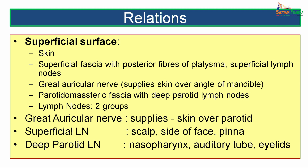The superficial surface is related to the skin, superficial fascia with posterior fibers of platysma, superficial lymph nodes, the great auricular nerve which supplies the skin over the angle of the mandible, and the parotidomasseteric fascia with the deep parotid lymph nodes. The superficial lymph nodes drain the side of the face and the pinna, while the deep parotid lymph nodes drain lymph from the nasopharynx, the auditory tube and the eyelids.